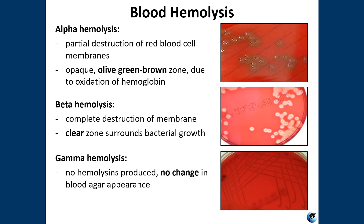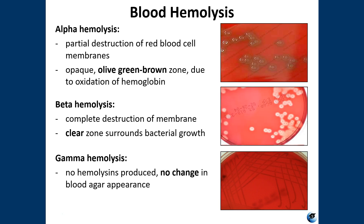Alpha hemolysis looks like a bruised apple — a greenish-brown area in the medium. Beta hemolysis is the complete destruction of red blood cells and hemoglobin, resulting in a clearing of the medium around the colonies. With beta hemolysis, if you hold the plate up to the light and look through the bottom, you can see clear through it. Gamma hemolysis is actually negative for hemolysis — it appears as simple growth with no change to the media at all. Both alpha and beta are considered positive for hemolysis; gamma is negative.